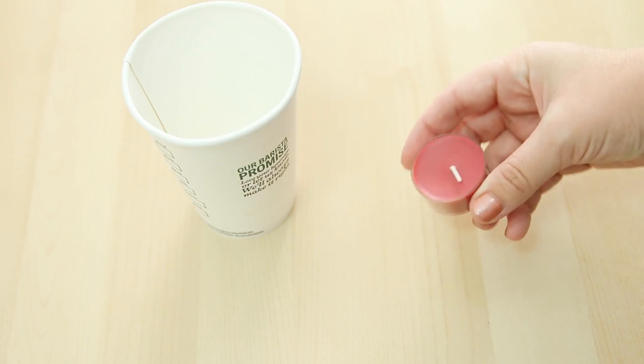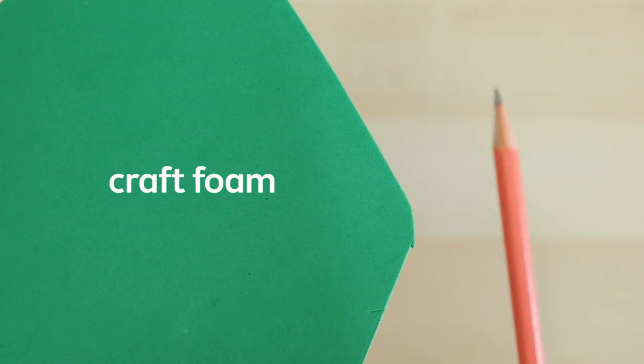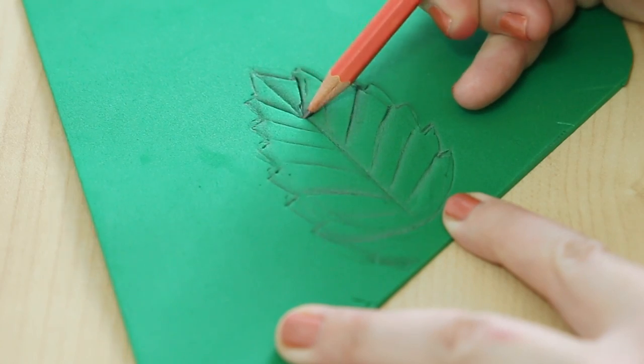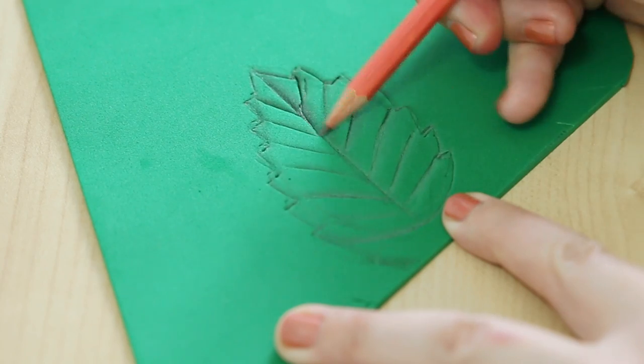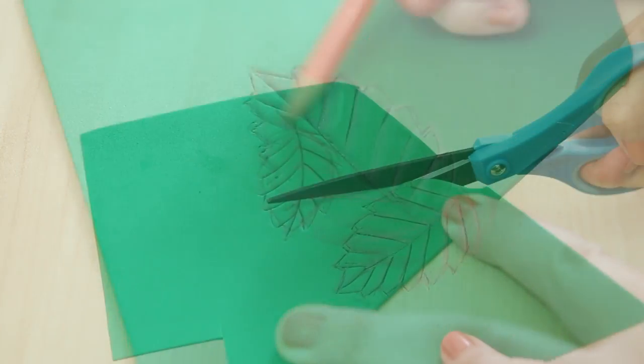For this single tea light holder, I'm using a paper coffee cup for the mold and craft foam to make a fall leaf design. I'm going to draw out a couple of leaves with a pencil and then press hard on the lines that I made so that it creates an embossed look.